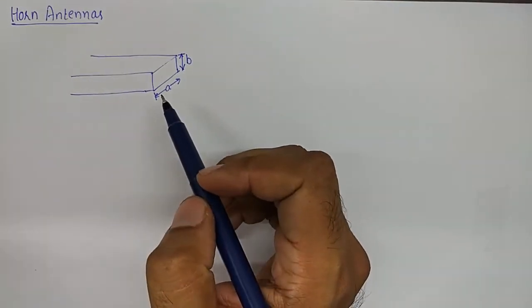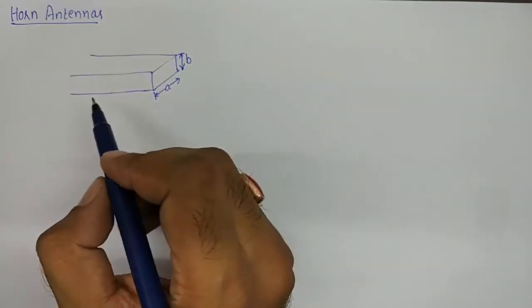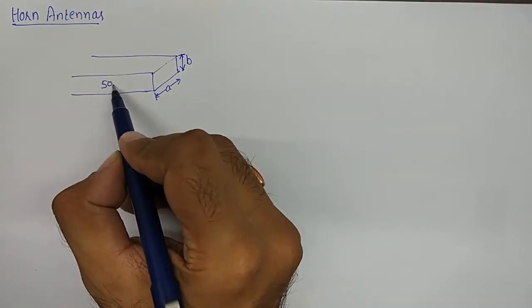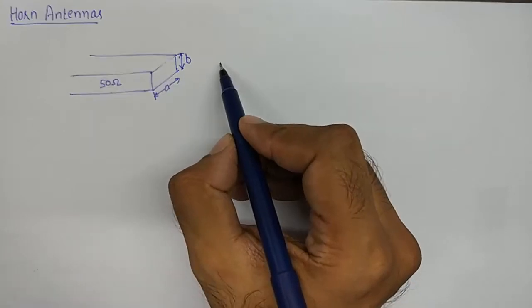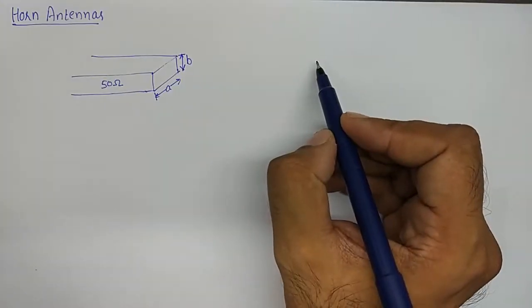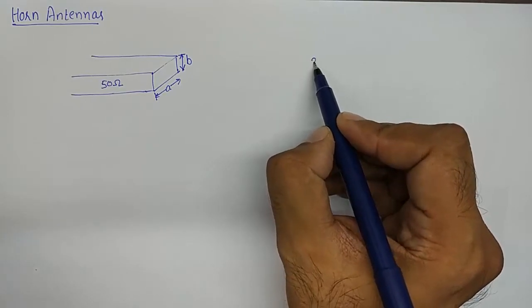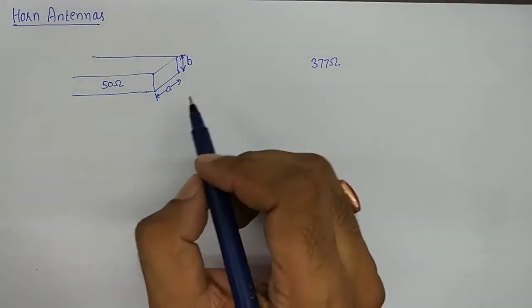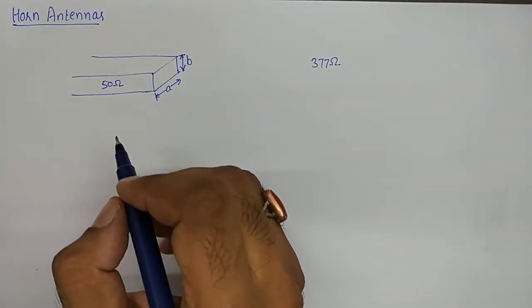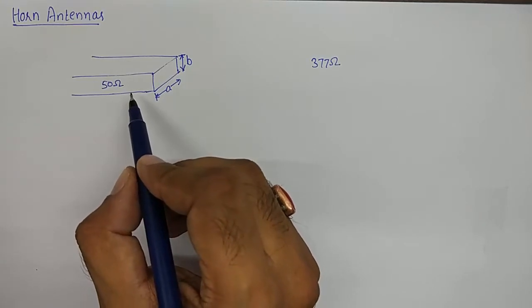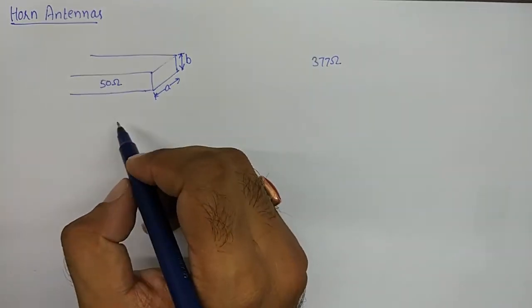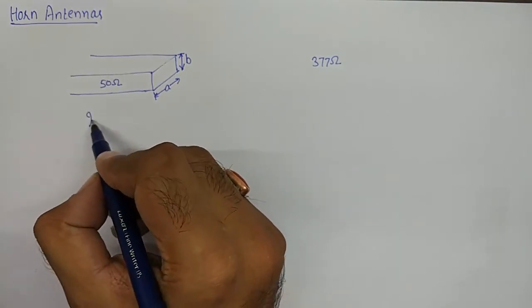Before we study horn antennas, we must understand that a rectangular waveguide — a hollow metallic structure — cannot be used as an antenna. A rectangular waveguide has an internal impedance of approximately 50 ohms, and the impedance of air is 377 ohms. There is a huge mismatch of impedances between a rectangular waveguide and air, which is why it is not used as an antenna.